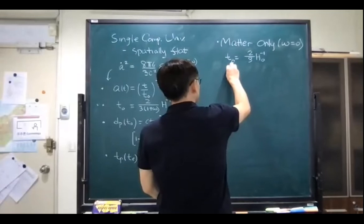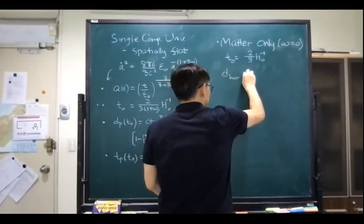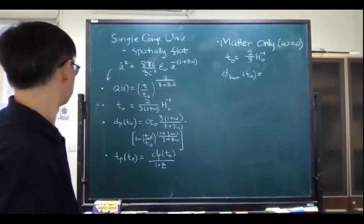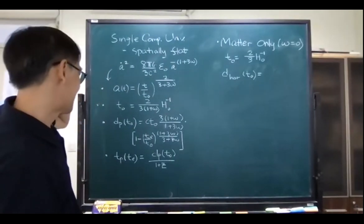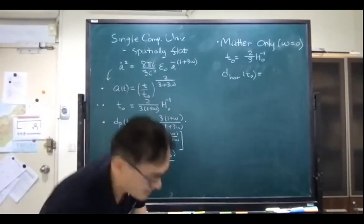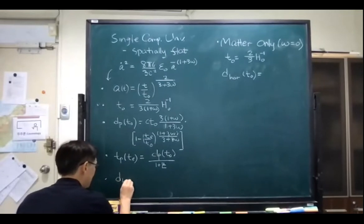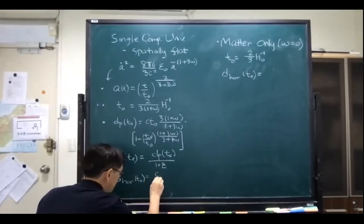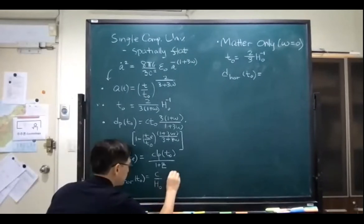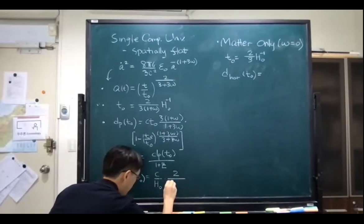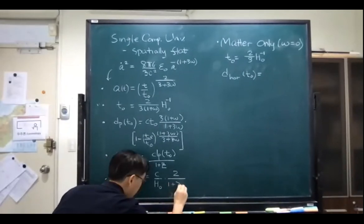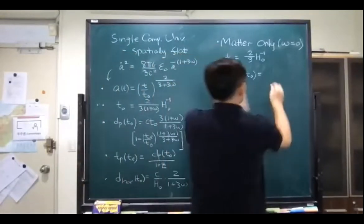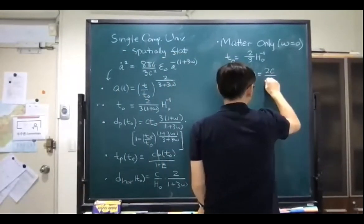And the horizon distance. Let me write it here: the horizon distance was c over H₀ times two divided by one plus three w. So with w equal to zero, I have two c over H₀, or equivalently three c t₀.